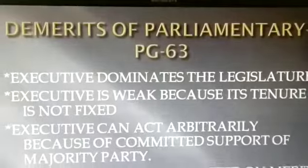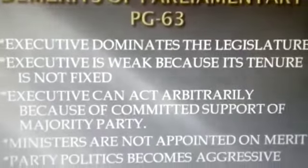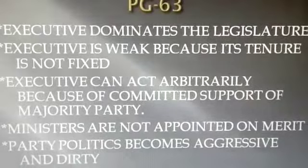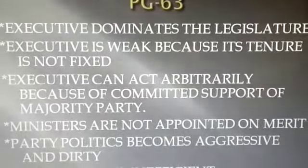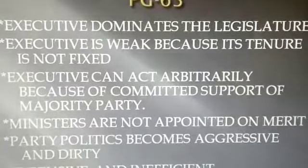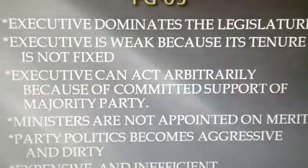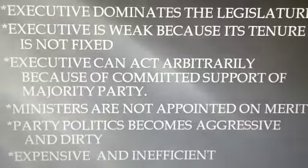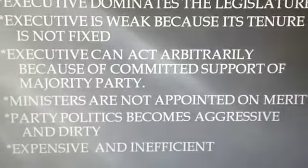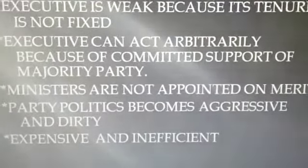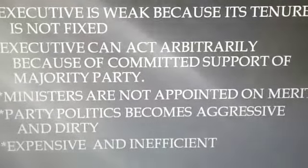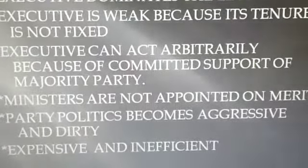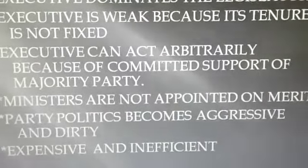Now the demerits of the parliamentary government. The first demerit is that the executive dominates the legislature. In the absence of democratic ethos and a sound party system, the parliamentary executive tends to become dictatorial and inefficient. The second demerit is that the executive is weak because its tenure is not fixed — the insecurity of tenure can be a source of limitation, particularly when the executive enjoys only a thin majority in the legislature. The third demerit is that the executive can act arbitrarily because of the committed support of the majority party, leading to domination of the legislature by the executive when it enjoys a large majority of seats.